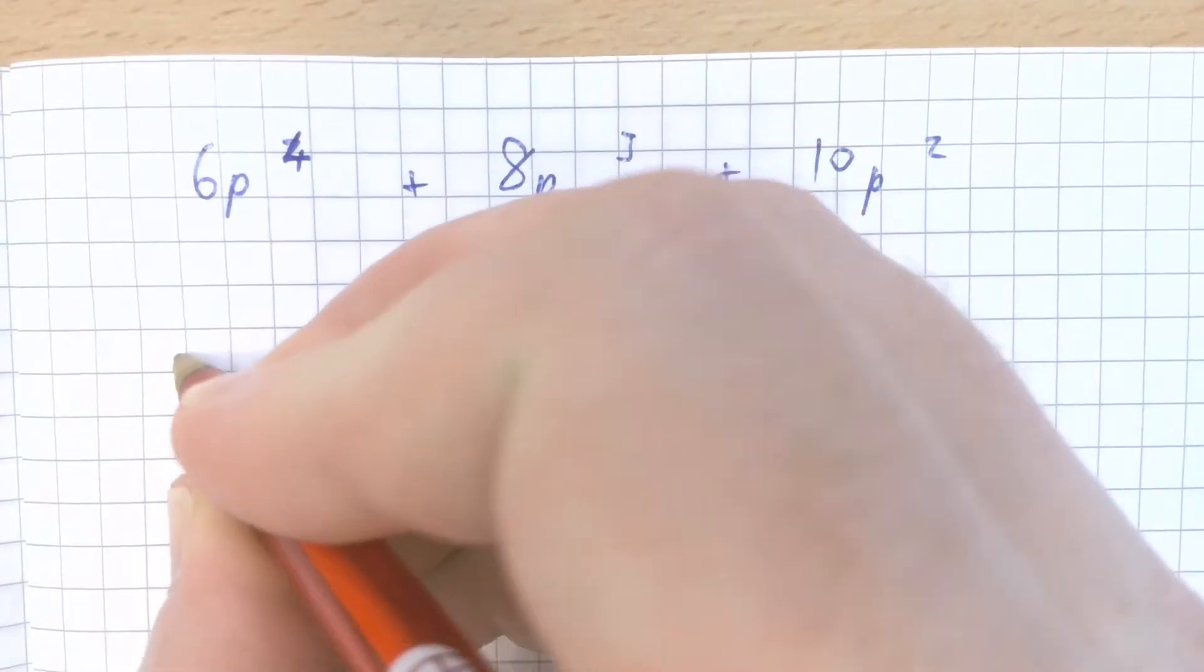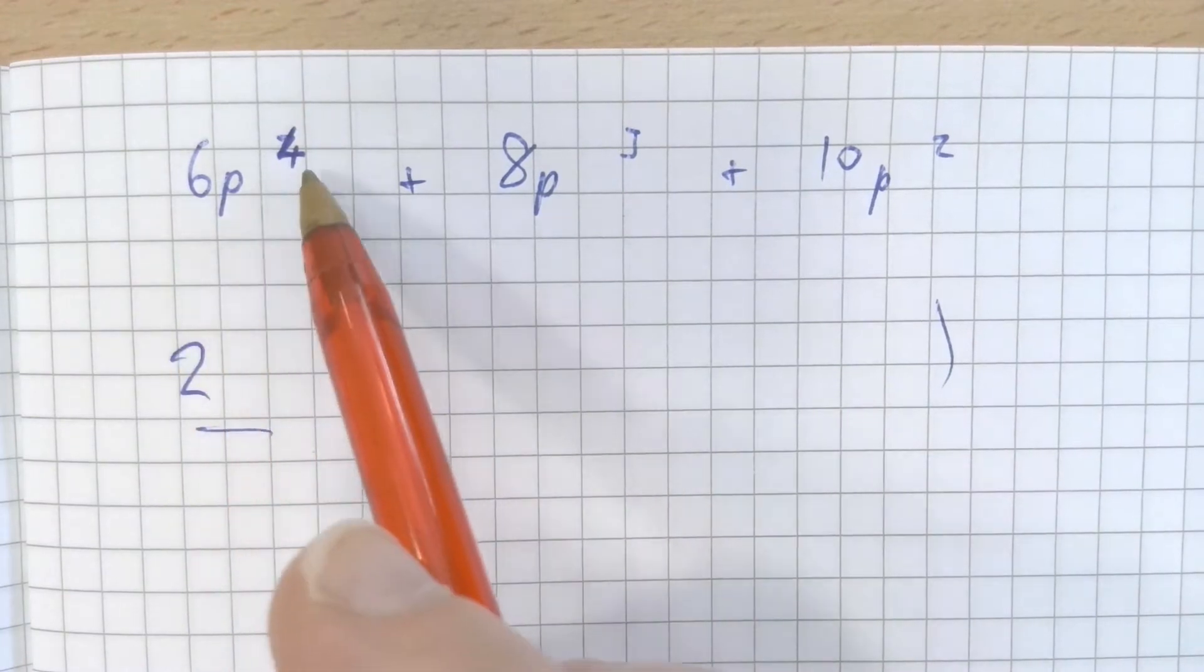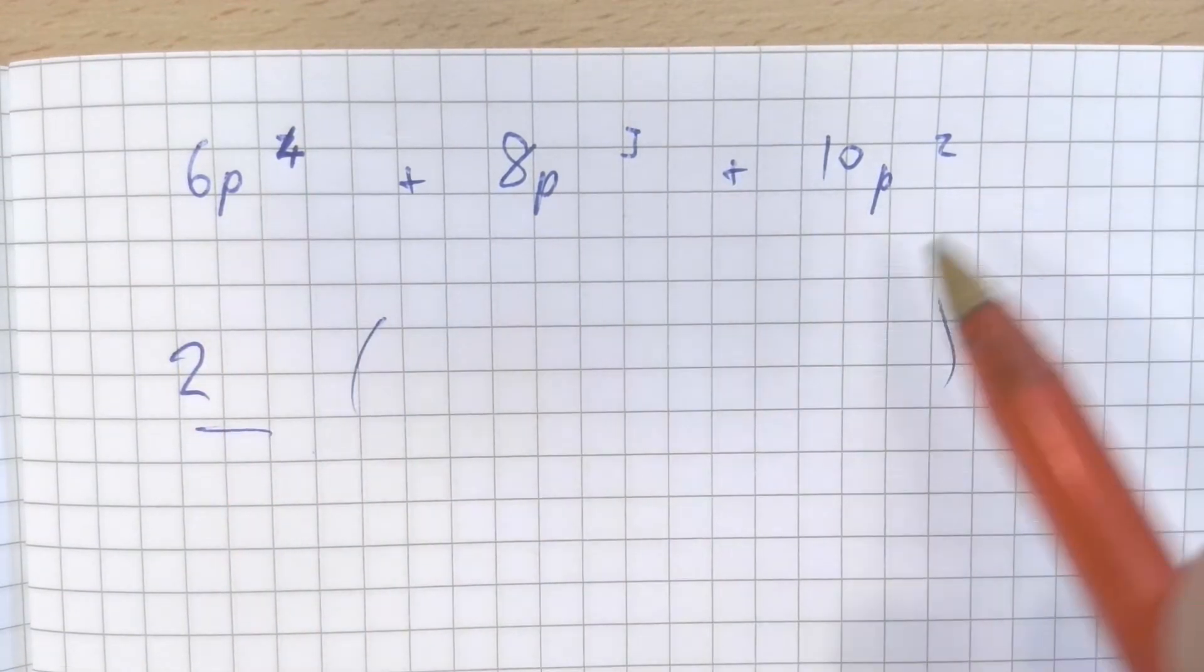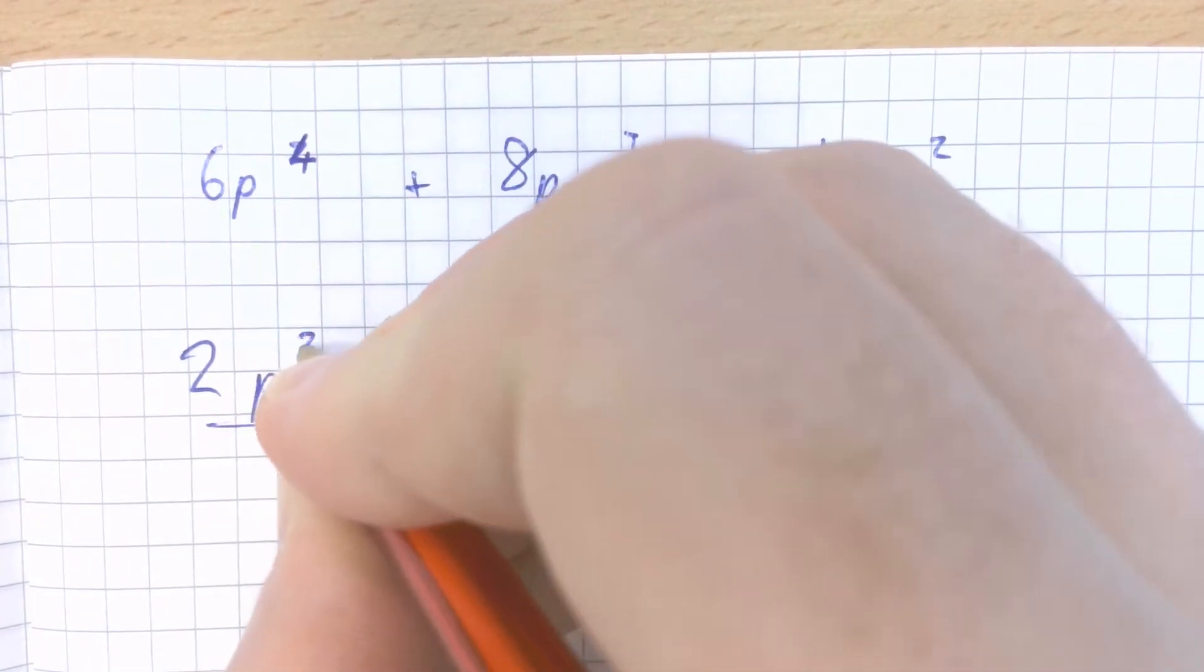The answer to that is 2. What is the highest common factor between p to the power of 4, p cubed and p squared? Well, that's p squared. p squared is common in all of those terms.